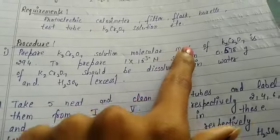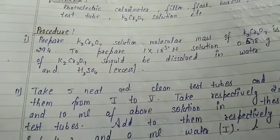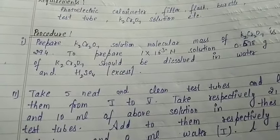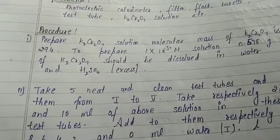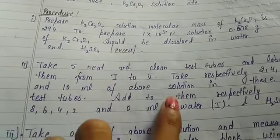Procedure number one: prepare potassium dichromate solution. Molar mass of potassium dichromate is 294. To prepare 1×10⁻³ M solution, 0.578 gram of potassium dichromate should be dissolved in water and H₂SO₄ excess.